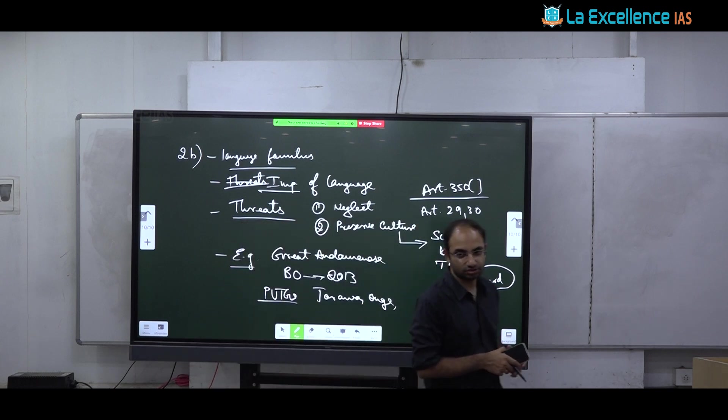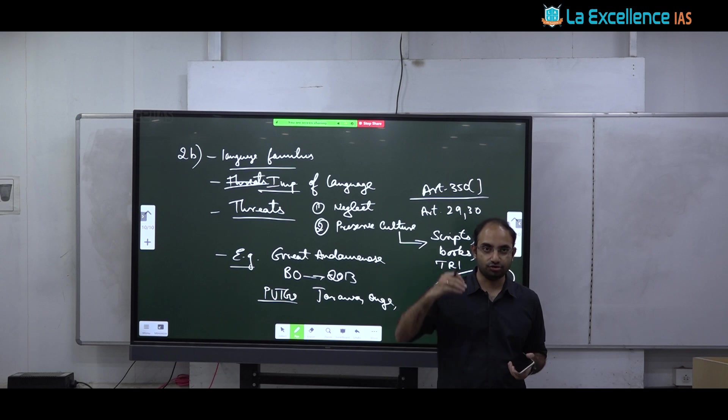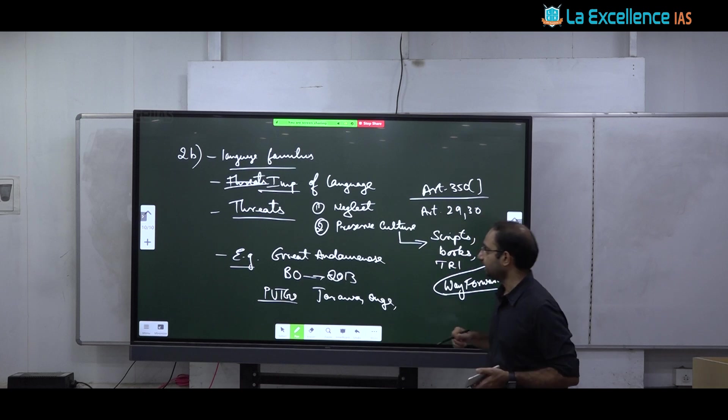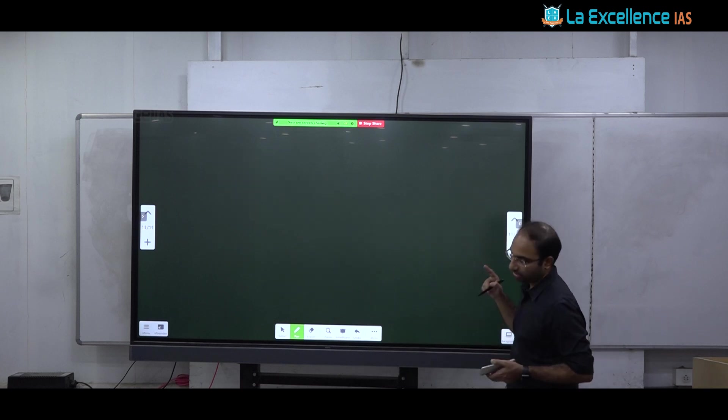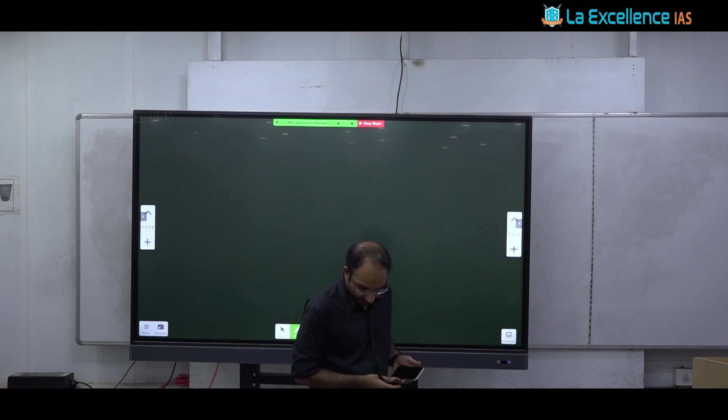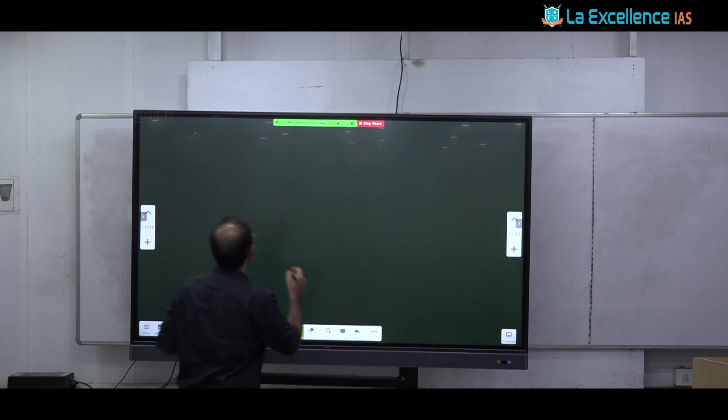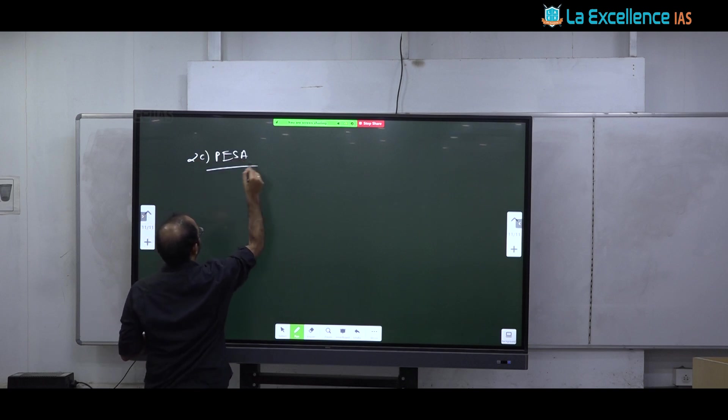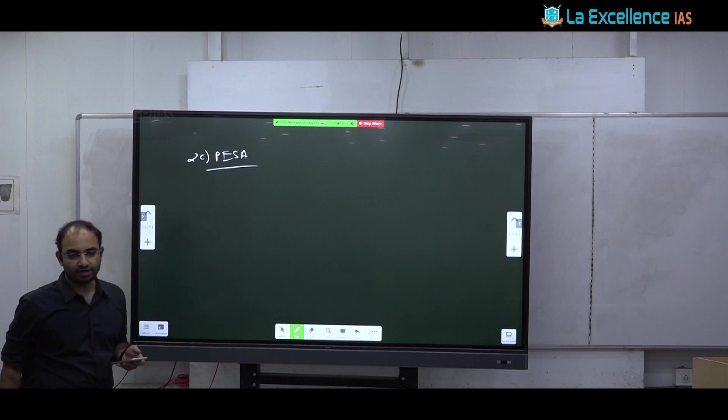So link language to many things not just education. Language to indigenous knowledge, language to education, language to employment, language to identity, language to empowerment. Then your answer will be broad. Otherwise, it will appear to be very very narrow. Next is PESA. PESA I will do C and E together both are related. PISA I am sure most of you should be able to handle. It is a very easy topic. Panchayat Raj extension to scheduled areas.